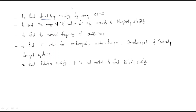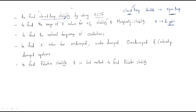Stability means whenever we give a bounded input we get a bounded output. The important thing is we are using the open-loop transfer function to find the closed-loop stability. Next, we find the range of K values for system stability and marginal stability. K here is the DC gain, and we find it for stable as well as marginally stable systems.